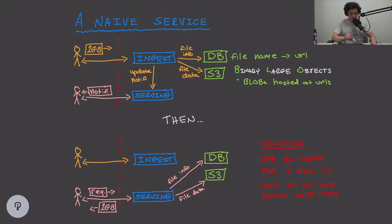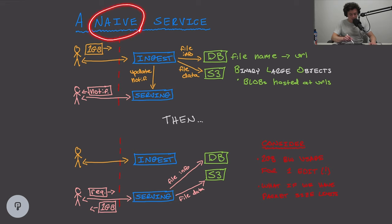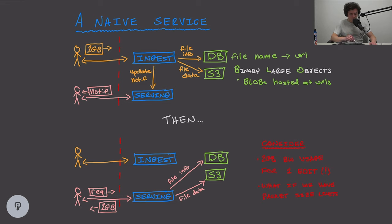Moving on to a naive service implementation — this is marked as naive as an initial precursor to the problem. I want you, as we explain this, to think about why it's naive, because there are some big glaring issues in it. Take the time to think about that on your own as well.